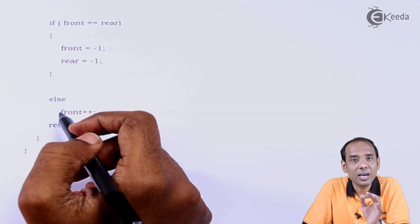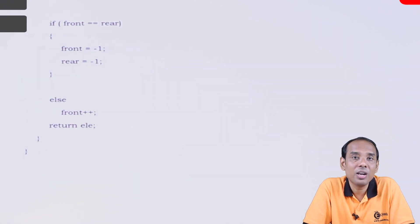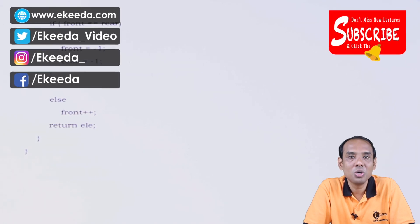If there are multiple elements, we delete the front element by simply incrementing front with front++. Once front moves ahead, the queue runs from the new front position to rear. Then we return the stored element ele. To summarize: for both insert and remove we check three conditions each, and the positions of front and rear are critical in managing the queue.